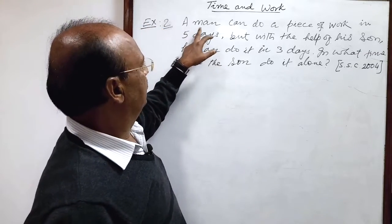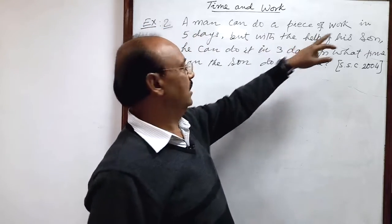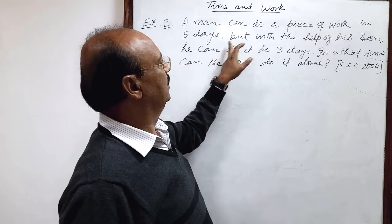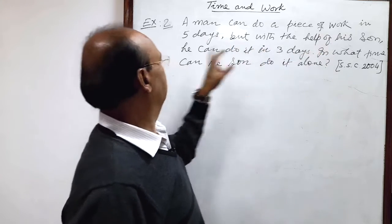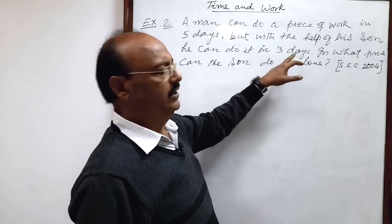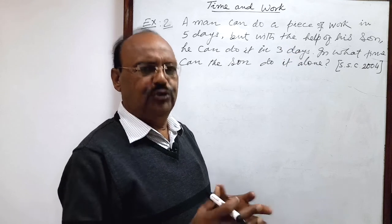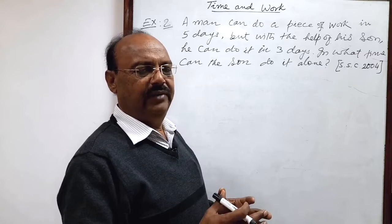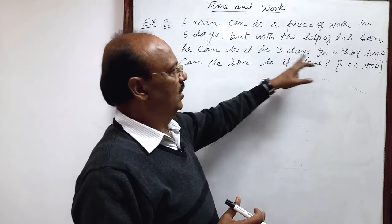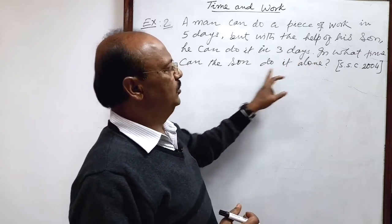Question is: a man can do a piece of work in five days, but with the help of his son he can do it in three days. In what time can the son do it alone?